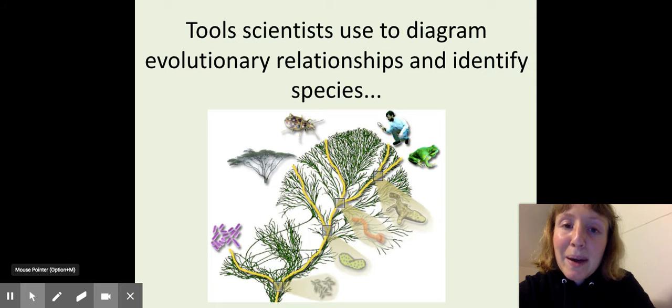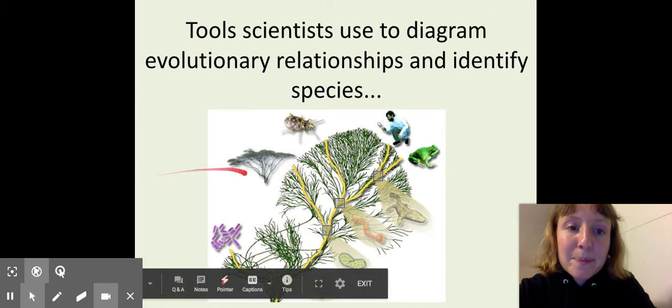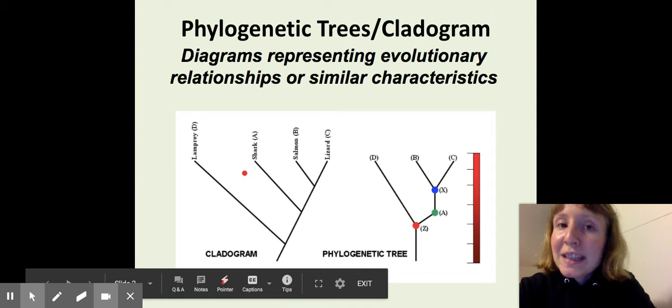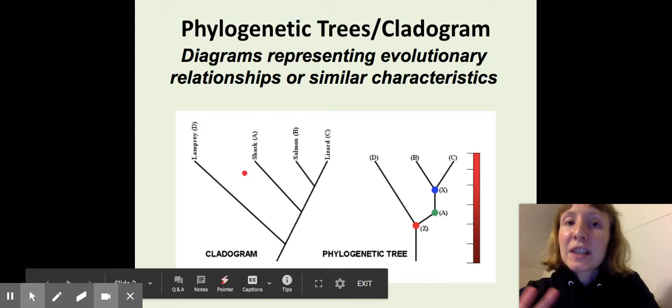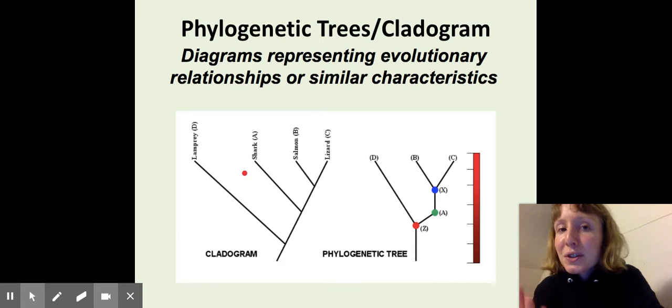Let's finish up this rainy week by talking about the tools scientists use to identify species and diagram evolutionary relationships. So evolution leads to amazing diversity of life on earth, but scientists use certain tools to organize all of that diversity.